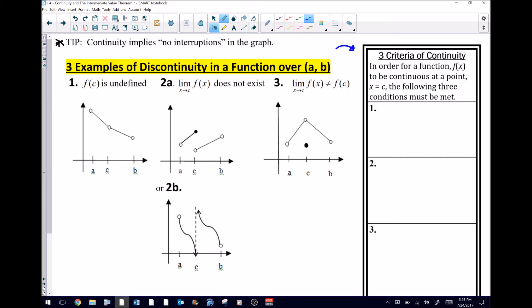That is pretty obvious why this particular function is not going to be continuous at C, but we want to have a little bit more formal way to explain that. That's where the right side of this particular page comes into play, where I'm going to have us list the three different criteria for continuity.